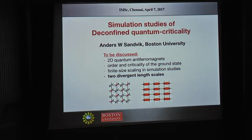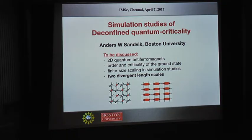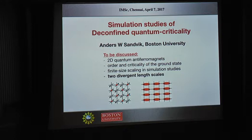What I'm going to discuss is 2D quantum antiferromagnets — models of such things — and the way these can order and what kind of phase transitions we can have. I will focus on two types of order and the quantum phase transition between them: from the familiar Néel antiferromagnet to a dimerized state, where ovals correspond to singlets. The unusual thing is that there are two divergent length scales at this transition.